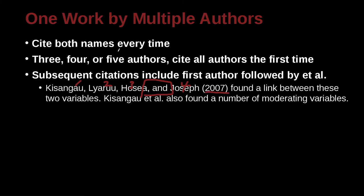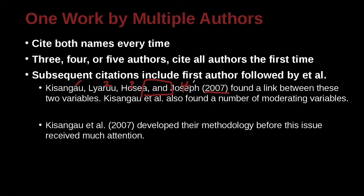So if it's three, four, or five authors, cite all authors the first time, as in this example. Here's another example, but a little bit later in the paper. So now we have the same paper, 2007. Xin Zhang Gu is the main author, the lead author. But now we use et al. So the first time it's in the paper, we do it this way. The second and more times, we use et al.